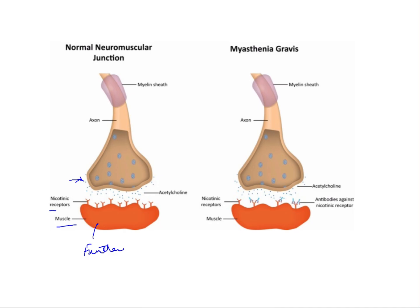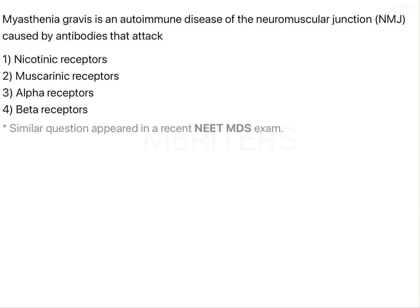In myasthenia gravis, antibodies are present against the nicotinic receptors. What they do is they bind to and block the nicotinic receptors. All these nicotinic receptors are blocked because of those antibodies. When acetylcholine is released, it doesn't have any space to attach, so your muscle function is impaired because your neurotransmitter cannot attach to the nicotinic receptors and the function cannot occur properly, resulting in skeletal muscle impairment mainly in the voluntary muscles.